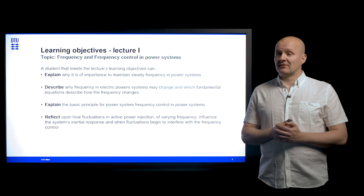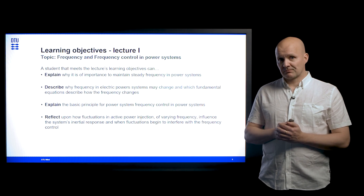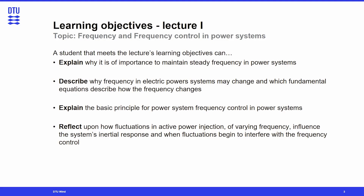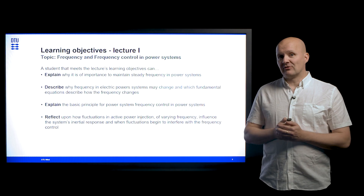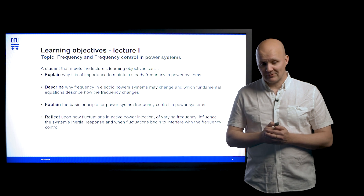The learning objectives for this lecture are defined as follows. A student that meets the lecture's learning objectives should be able to explain why it's of importance to maintain steady frequency in power systems, describe why electric power systems may change, and which fundamental equations describe how the frequency changes. Also, explain the basic principle of power system frequency control in power systems, and at last reflect upon how fluctuations of active power injection influence the inertial response and when those fluctuations begin to interfere with the frequency control in the system.